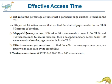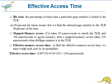The hit ratio is the percentage of times that a particular page number is found in the TLB. An 80% hit ratio means we find the desired page number in the TLB 80% of the time. For mapped memory access, if it takes 20 nanoseconds to search the TLB and 100 nanoseconds to access memory, then a mapped memory access takes 120 nanoseconds when the page number is in the TLB.